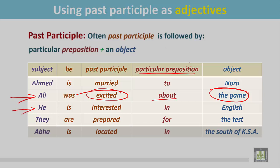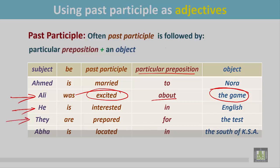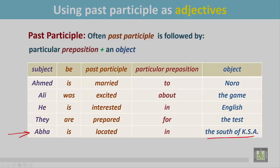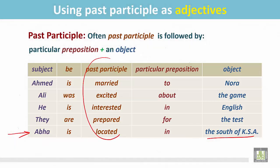He is interested in English. They are prepared for the test. And finally, Abha is located in the south of KSA. So in this chart we found that the past participle form of the verb is followed by the particular preposition and the object.